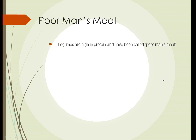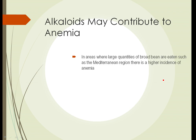Legumes are extremely high in protein and have been called the poor man's meat. So they can fix atmospheric nitrogen into a form that plants can use, and they're high in protein. It's not all good news though. Many legumes — certain beans in particular — contain certain alkaloid compounds which may increase the incidence of anemia. And in certain Mediterranean areas where large quantities of broad beans are eaten, there is a higher incidence of anemia.